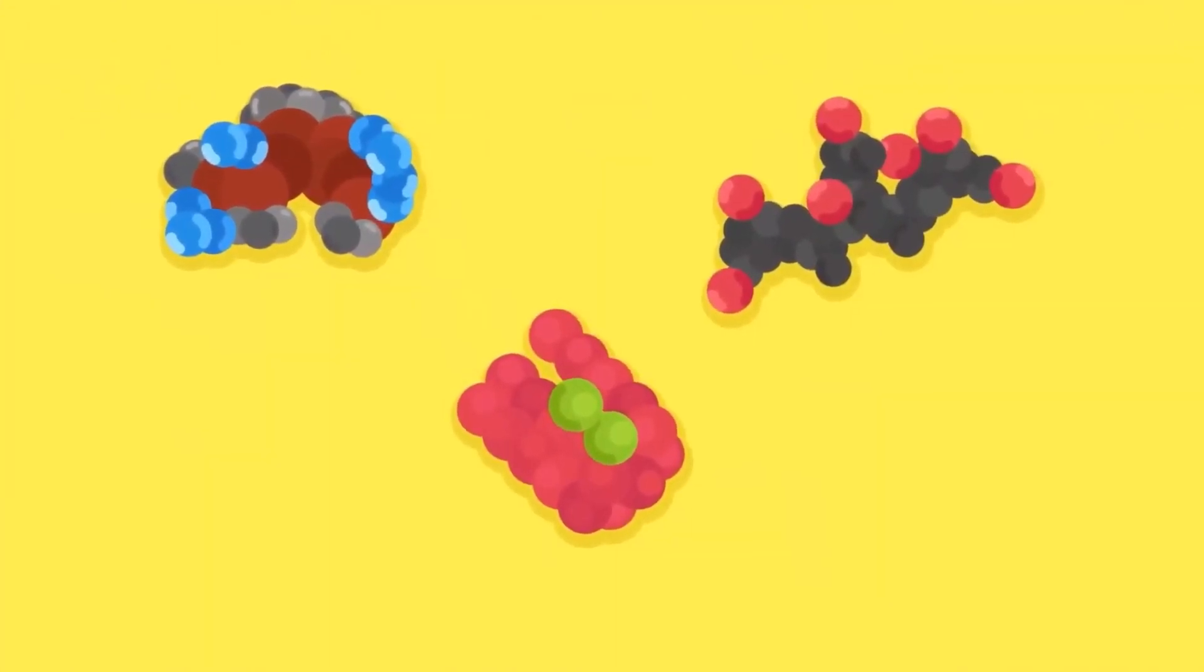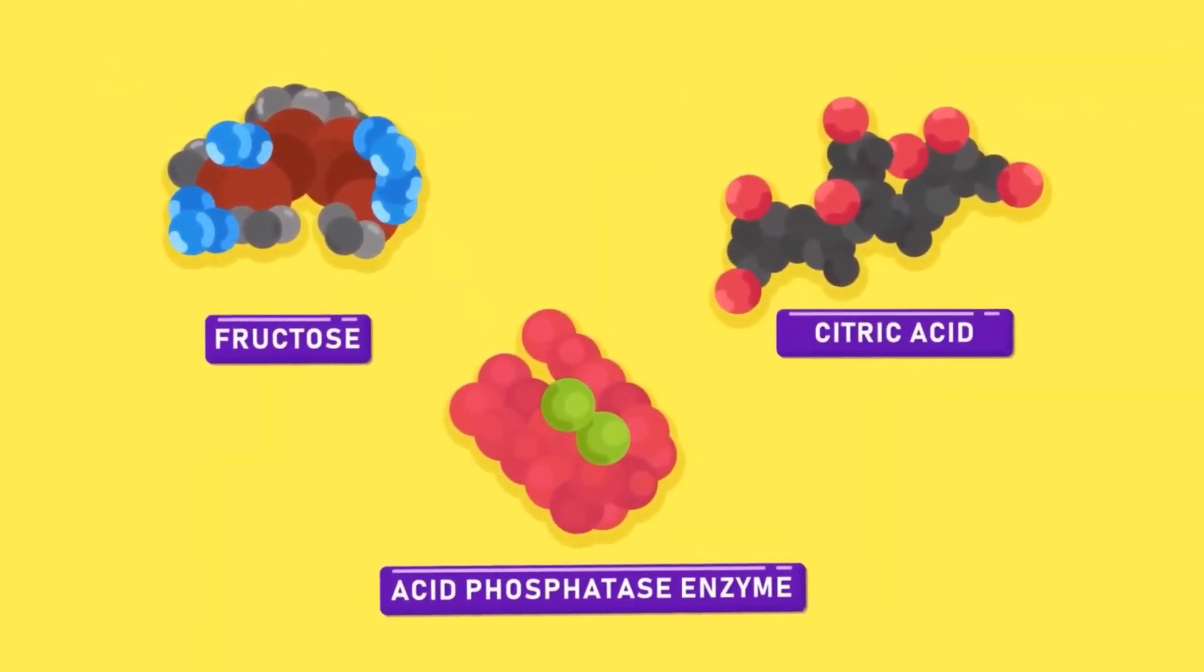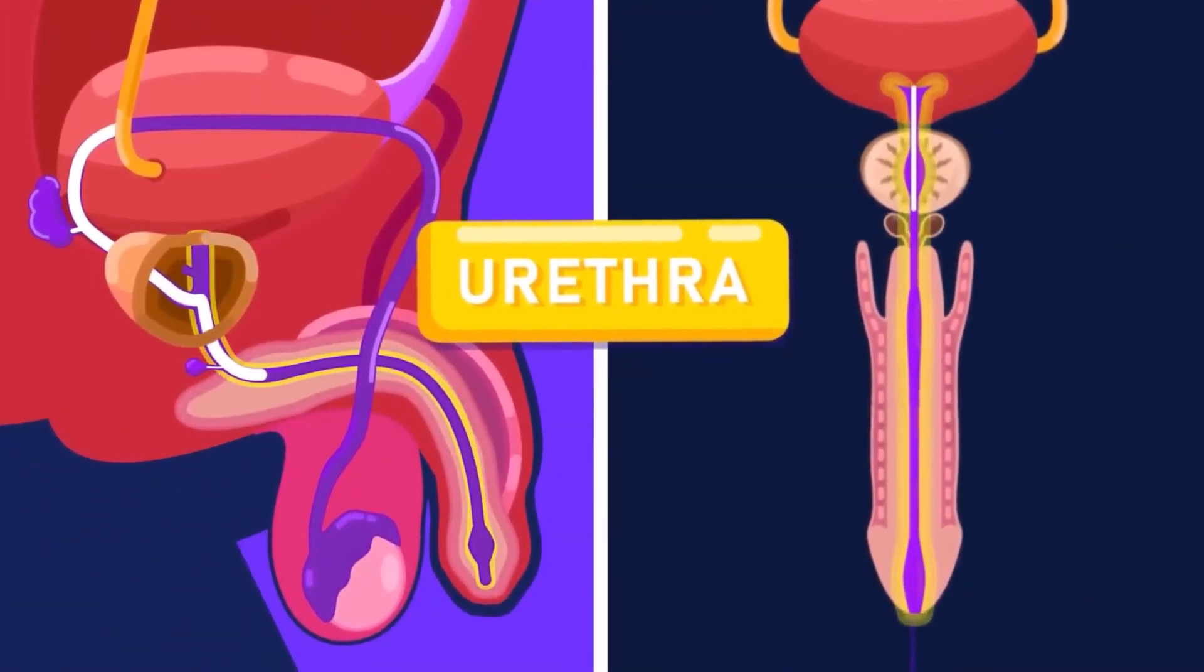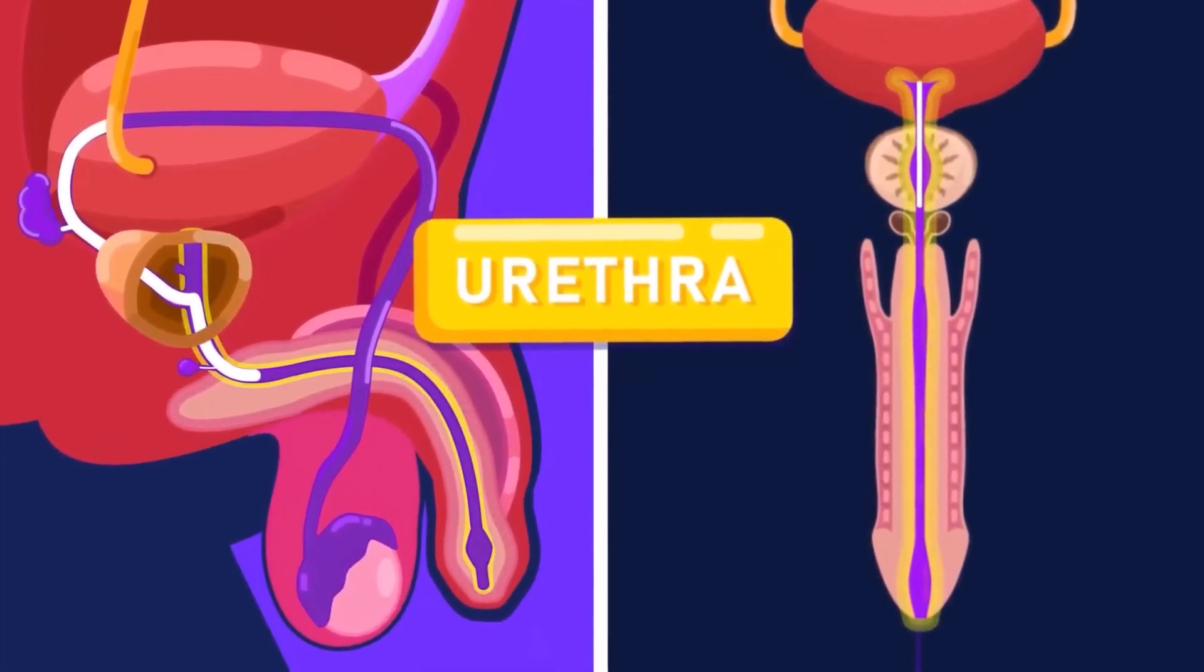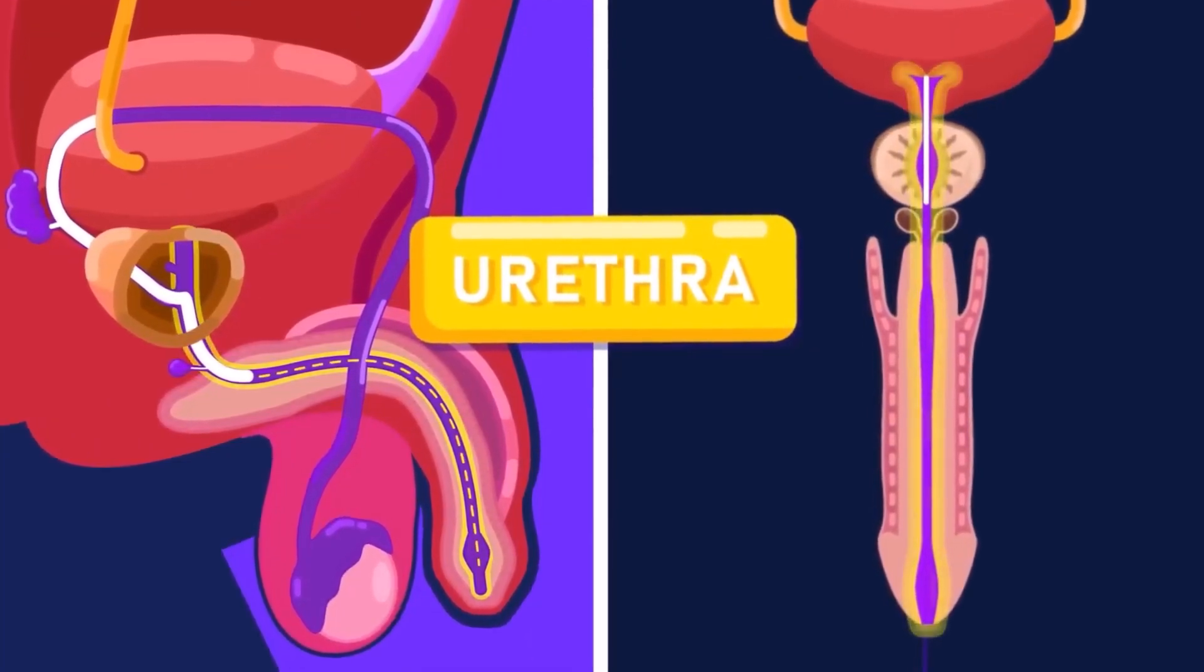The semen is an important fluid because it contains nutrients and enzymes which serve to nourish and protect the sperms and activate them so that they begin to swim. The urethra is a tube that passes through the centre of the penis to carry the semen to the exterior during ejaculation.